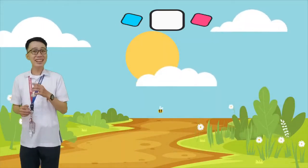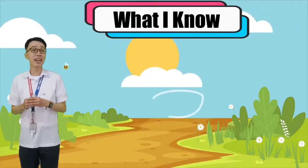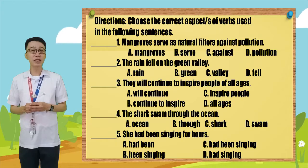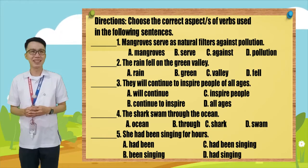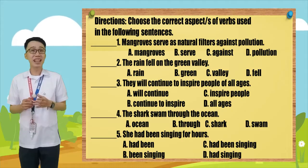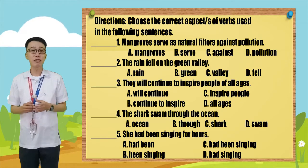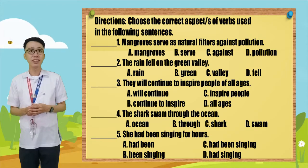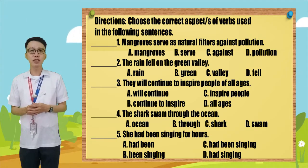Let us see how well you know the lesson by answering this activity. Directions: Choose the letter of the aspect of verbs used in the following sentences. Number one: Mangroves served as natural filters against pollution. A. Mangroves. B. Served. C. Against. D. Pollution.